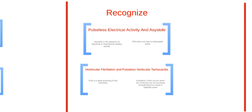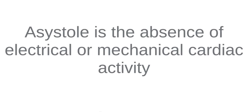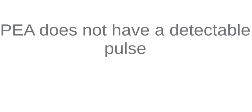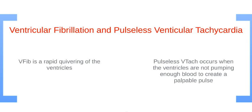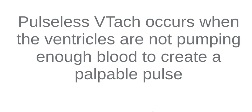Next we'll discuss PEA, V-fib, and V-tach. PEA and asystole are related cardiac rhythms in that they are both life-threatening and not shockable — they do not respond to defibrillation. Asystole is the absence of electrical or mechanical cardiac rhythm, represented by a flatline ECG. PEA does not have a detectable pulse. V-fib and V-tach are life-threatening, shockable cardiac rhythms resulting in ineffective ventricular contractions. V-fib is a rapid quivering of the ventricles instead of a forceful contraction, not synchronized with atrial contractions. Pulseless V-tach occurs when the rapidly contracting ventricles are not pumping blood sufficiently to create a palpable pulse. In both, patients are not receiving adequate perfusion.